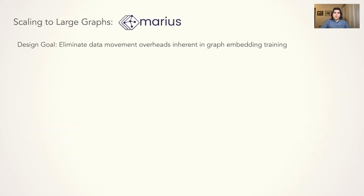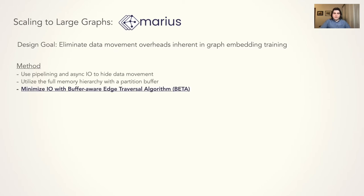To address data movement overheads inherent in the graph embedding workload, we introduce MARIUS, an efficient system for single machine training of embeddings on large-scale graphs. We apply techniques such as pipelining, asynchronous I/O, and buffer management to hide and reduce data movement. We also introduce an I/O minimizing data ordering generated by the Buffer Aware Edge Traversal Algorithm, or BETA for short.